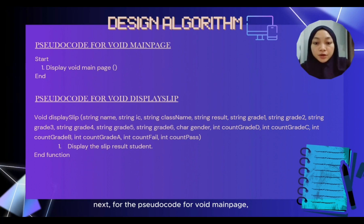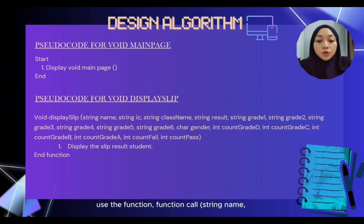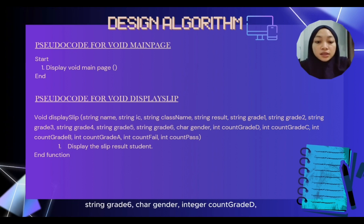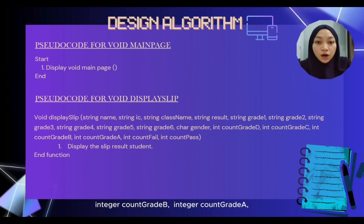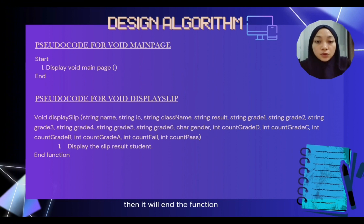For the pseudocode for void main page, when the user starts the system, it will display void main page. For the pseudocode for void display slip, we use the function call with parameters: string name, string IC, string class name, string result, string grade 1 through grade 6, char gender, integer count grade D, integer count grade C, integer count grade B, integer count grade A, integer count fail, and integer count pass. The system will display the overall slip result of the student, then end the function.